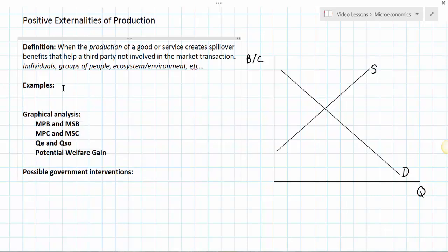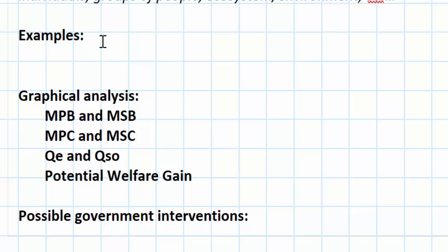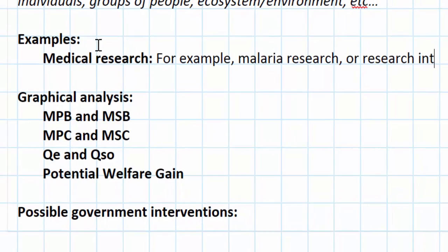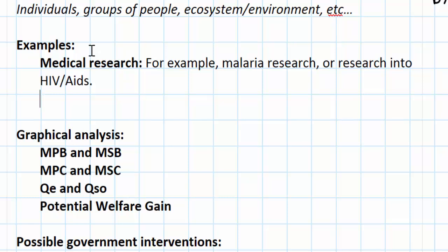Let's talk about some examples of goods or services that create positive externalities of production. One example is medical research — for example, malaria research or research into HIV and AIDS. Clearly, if a cure for HIV/AIDS or malaria could be developed, society as a whole would benefit, not just the firm or the individuals that are able to acquire that treatment. We could say that medical research of certain types creates positive externalities of production.